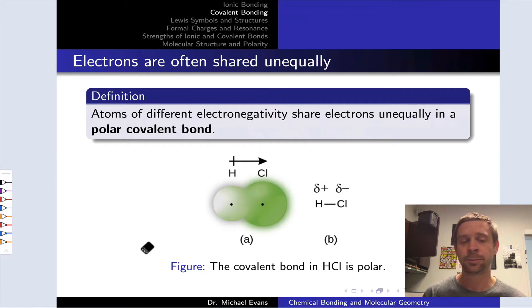Just because atoms in a covalent bond are sharing electrons doesn't mean they're doing so equally. In fact, many covalent bonds consist of an asymmetric distribution of electrons.